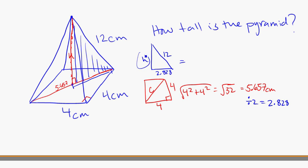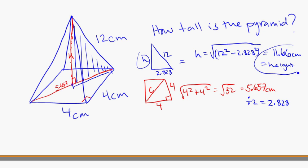And this time, I'm finding the short side. So h is going to be equal to the square root of the long side, 12 squared, minus 2.828 squared, all in brackets. And that's equal to roughly 11.66 centimeters. My height inside this pyramid is going to be 11.66 centimeters tall.